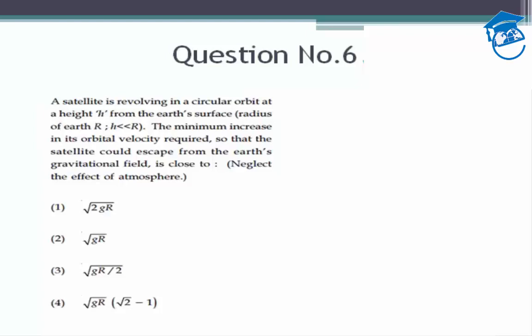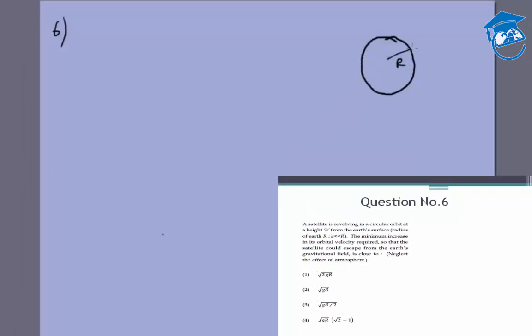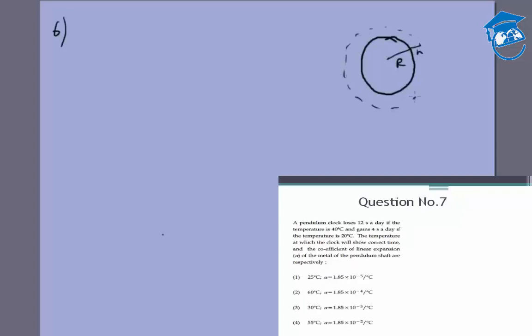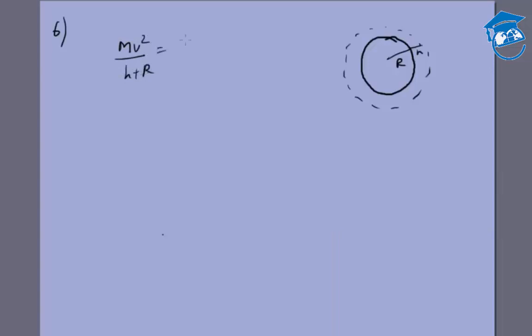So let's say this is the radius of the earth R, this is the height h at which the satellite is orbiting, so it is orbiting in a circle of radius h plus R. The equation will be mv squared by h plus R is equal to GM by (h plus R) whole squared.